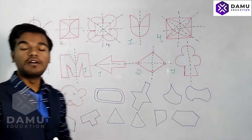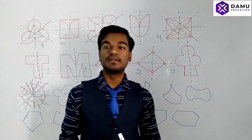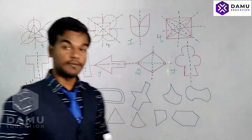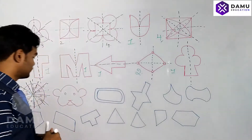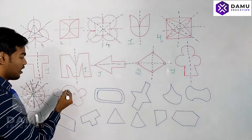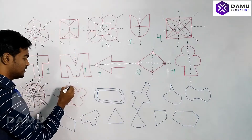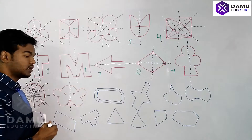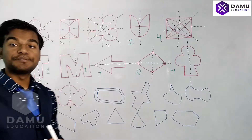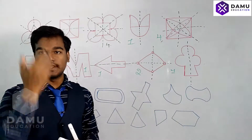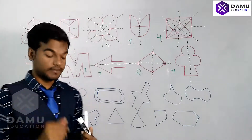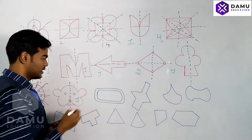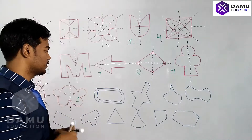Infinite lines of symmetry exist for a circle. Next, for a face shape, it will always have a vertical line of symmetry — the face always has a vertical line of symmetry. So for a face, there is only one line of symmetry.